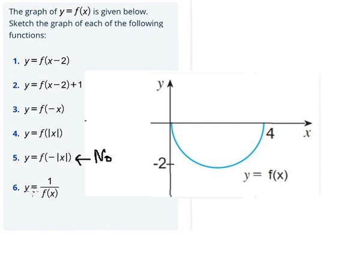Question number six, y equals 1 over f of x. That means we don't have number zero here, but on the graph we have zero, so the graph should be like this.